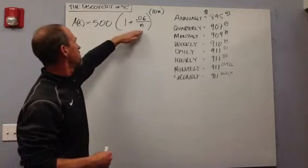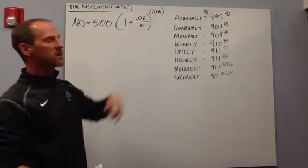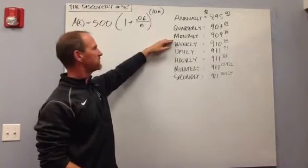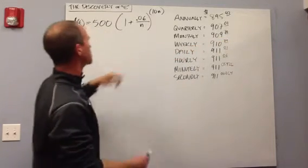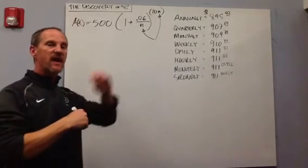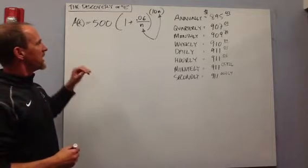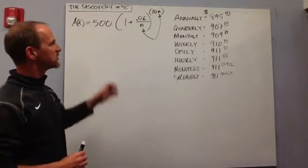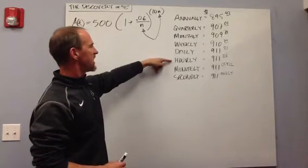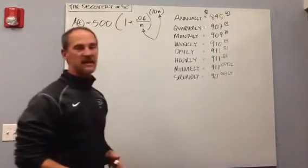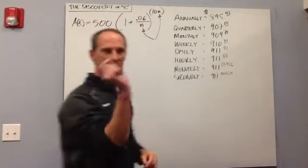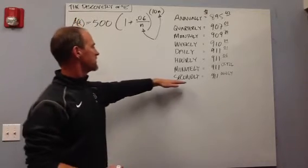If we were to compound it quarterly — that's checking on the amount and re-adding the interest four times a year — we're going to get interest on our interest at a slightly higher rate, so it jumps from $895 up to $907. If we figure interest every month, 12 times a year, that jumps up to $909. By adding more compoundings, you're adding little slivers of interest more frequently, but going from 52 times a year to 365 times to hourly, the return is getting less and less — basically settling at $911.06. There are diminishing returns, as they say.